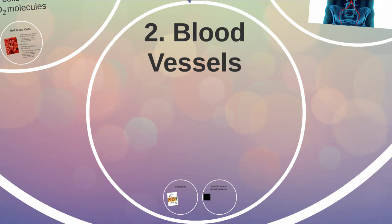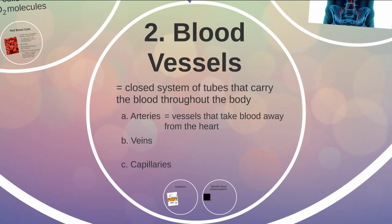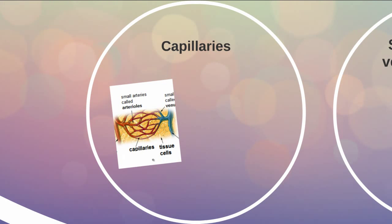The next part of the system are the blood vessels — a closed system of tubes that carry blood throughout the body. There are three main kinds: arteries, veins, and capillaries. Arteries take blood away from the heart. Veins take blood back to the heart. Capillaries are where arteries and veins meet. Textbooks typically depict red blood as oxygenated and blue as deoxygenated. Arteries leave the heart and branch into smaller and smaller vessels until we reach the capillaries.